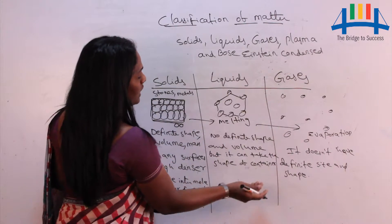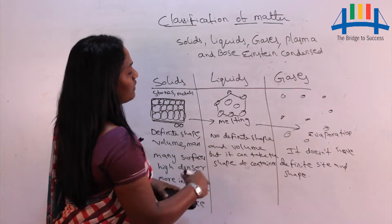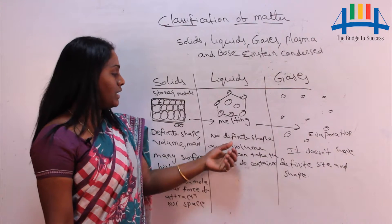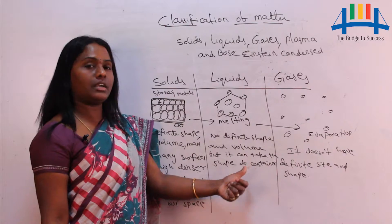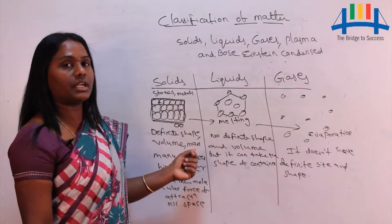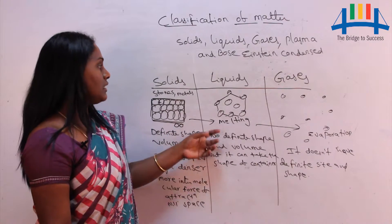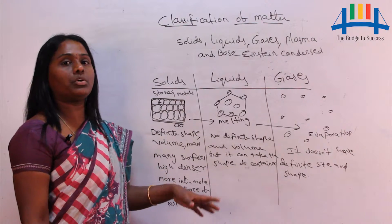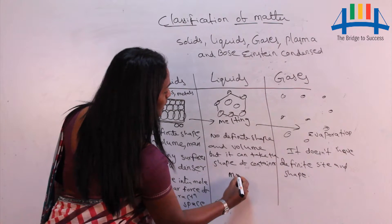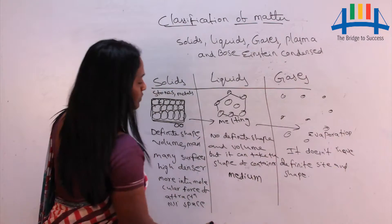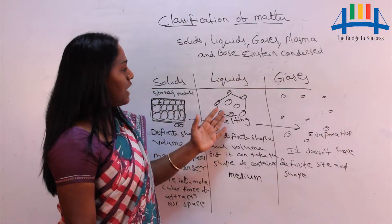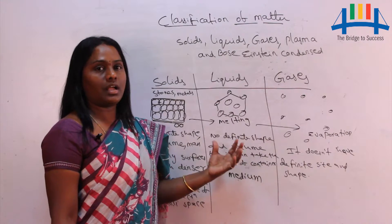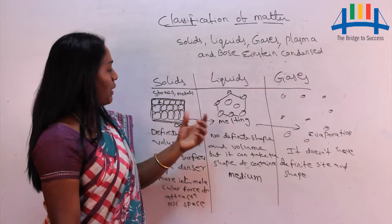Now coming to liquids: liquids do not have definite shape and size, but they can take the shape of their container. The intermolecular space and intermolecular force of attraction are both in a medium state. Liquids have only one free surface, and the density of liquids is medium compared to solids.